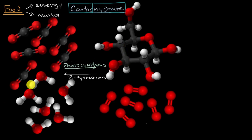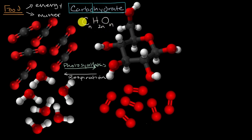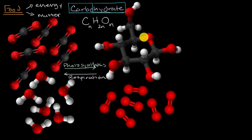Early chemists didn't actually understand the structure of a carbohydrate the way we do now. All they saw was the ratio between the carbons, hydrogens, and oxygens. For every N carbons, there are twice as many hydrogens and N oxygens as well. So for every single carbon, you have an H₂O — a water molecule. That's why early chemists, when they saw this ratio, called it carbohydrates. Glucose is a very simple carbohydrate, but you can make chains of glucose to build up more complex carbohydrates.